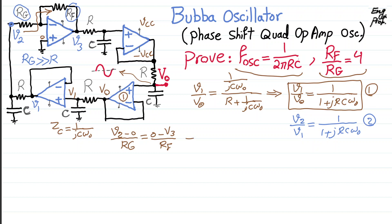And if you shuffle things around and clean up, you get V3 over V2 is negative R_F over R_G, as is well known, the gain for inverting amplifier. So that's equation number three.